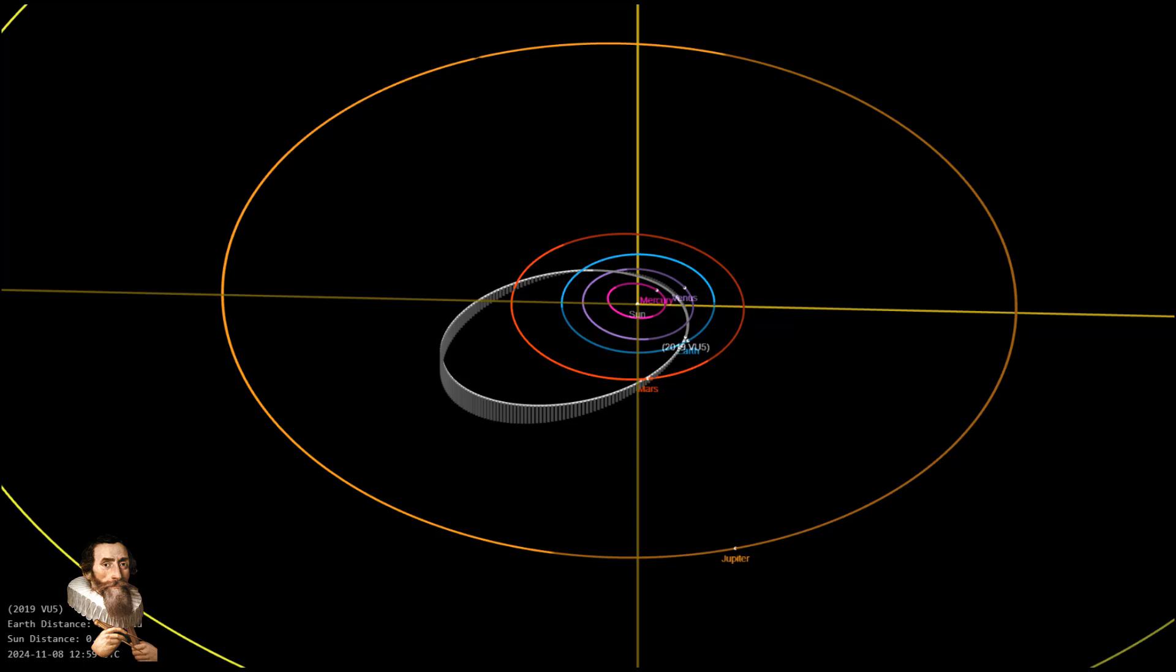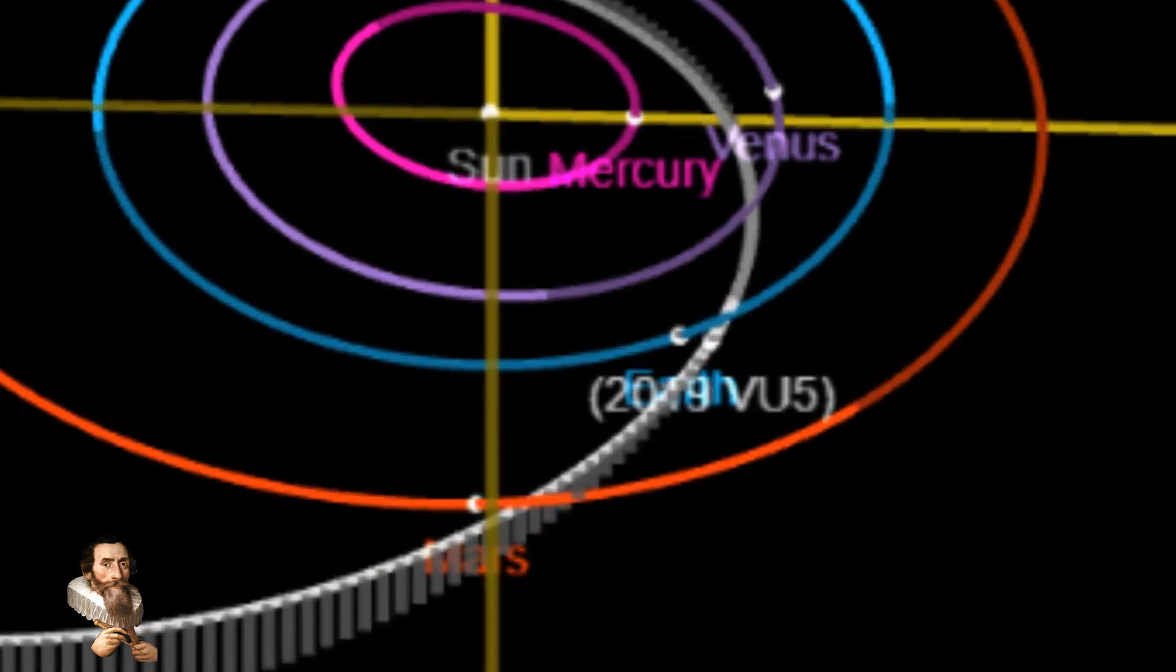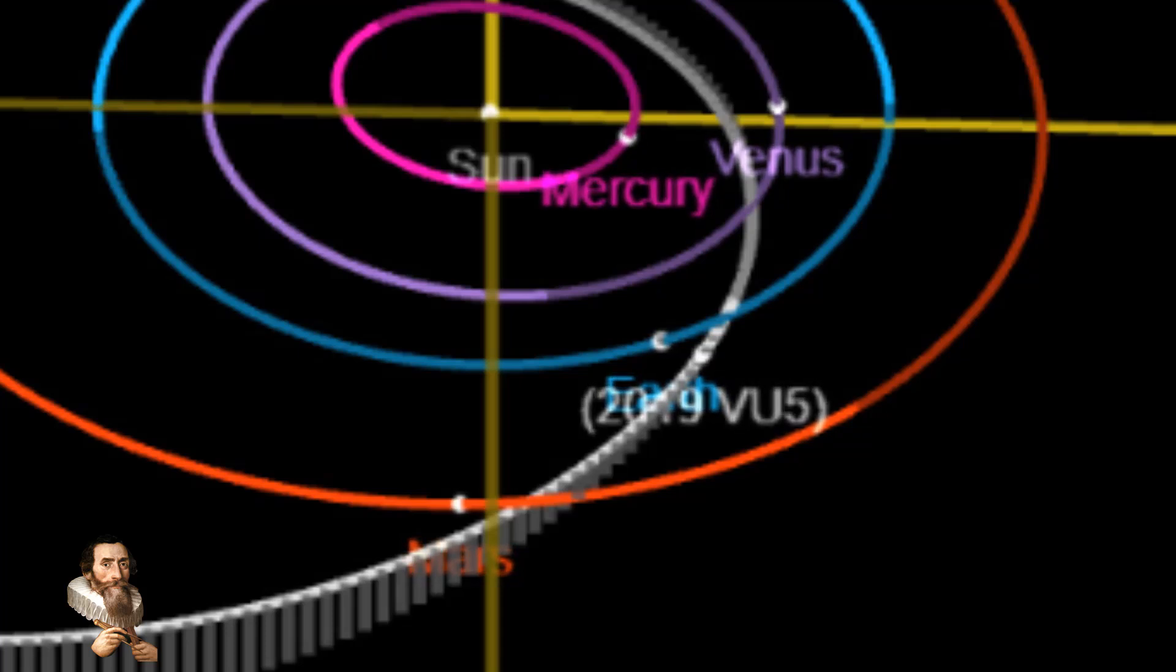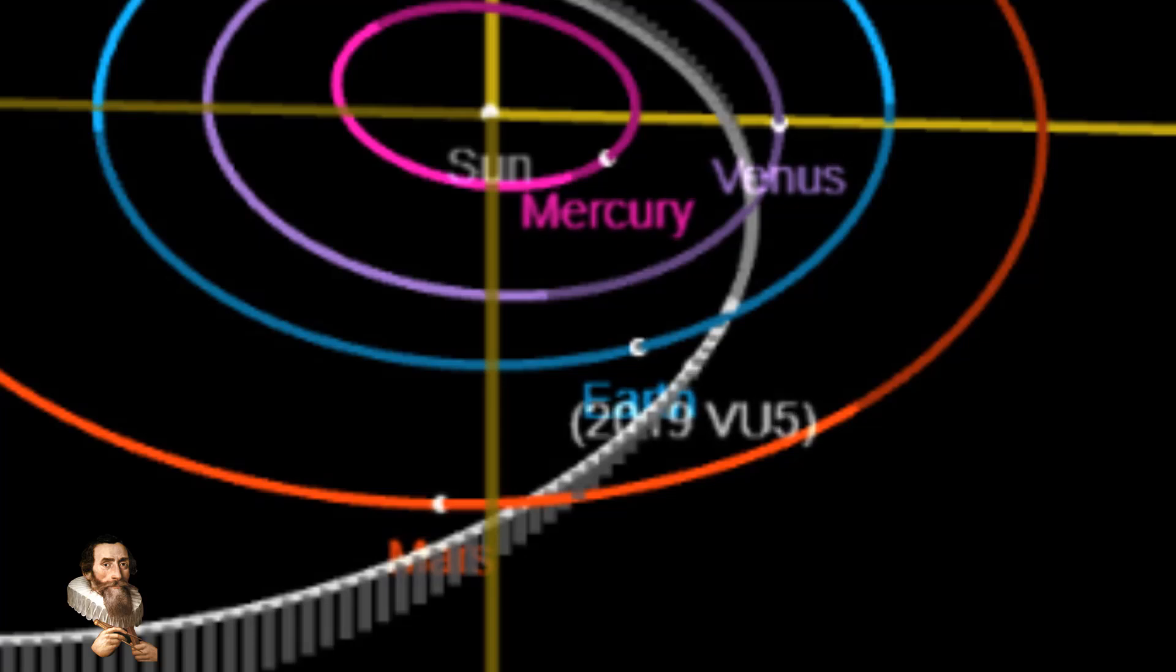NASA have issued an alert. Get this: Asteroid 2019 VU5 is 13 times the distance between the planet Earth and the moon, measuring 140 feet in diameter and travelling at 83,000 kilometers per hour.